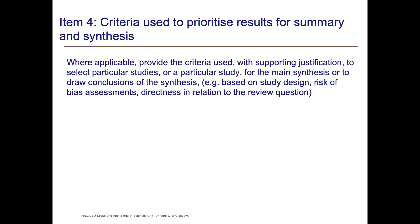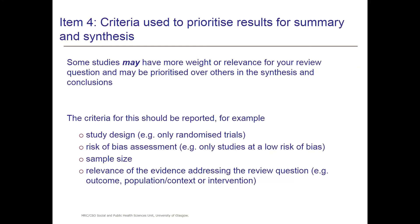Item 4 covers the criteria used to prioritise results for summary and synthesis. This item says: where applicable, provide the criteria used with supporting justification to select particular studies or a particular study for the main synthesis or to draw conclusions of the synthesis. As we're writing up our summary and synthesis, some studies may have more weight or relevance for a review question and we may want to prioritise those studies over others in the synthesis and conclusions.